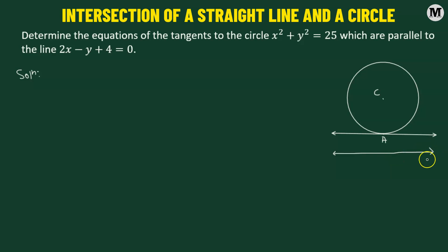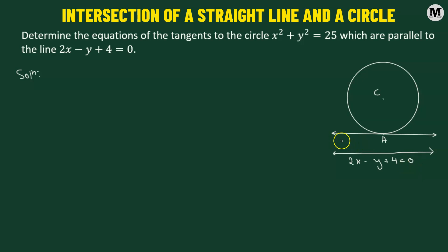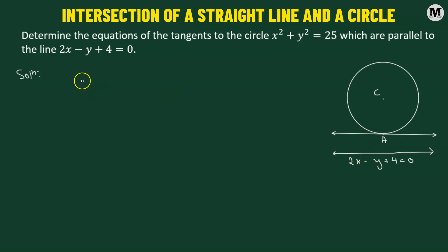So here we have this line which is parallel to the tangent line, and this line has the equation 2x minus y plus 4 equals 0. So what we'll do, we'll define the equation of the tangent line which is tangent to the circle at point A. We will be using the concept that two parallel lines have equal slope. Let's find the slope of the line 2x minus y plus 4 equals 0.